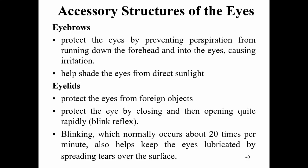The accessory structures of the eyes include: eyebrows, which protect the eyes by preventing perspiration from running into the eyes and help shade them from sunlight. Eyelids protect the eyes from foreign objects and have a blink reflex. Blinking keeps the eyes lubricated and occurs naturally at least 20 times per minute, protecting the eye from abrasion.